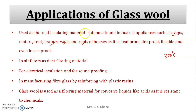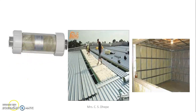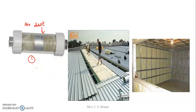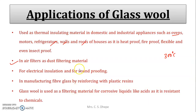Glass wool is used in air filters as a dust filtering material. In metro cities, at traffic signals, you can see air filters. The dust in the air is absorbed by this filter and purified air comes out. Glass wool is also used for electrical insulation and sound-proofing of roofs and walls of houses and theaters.